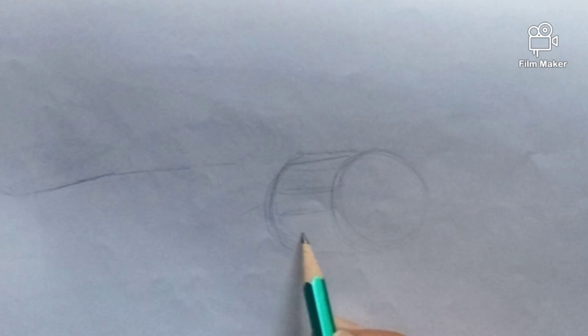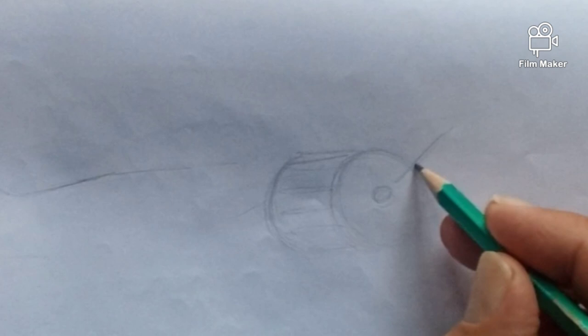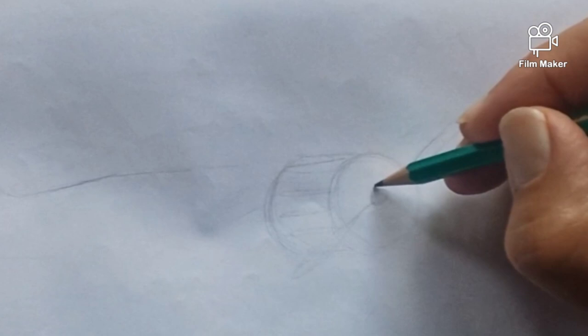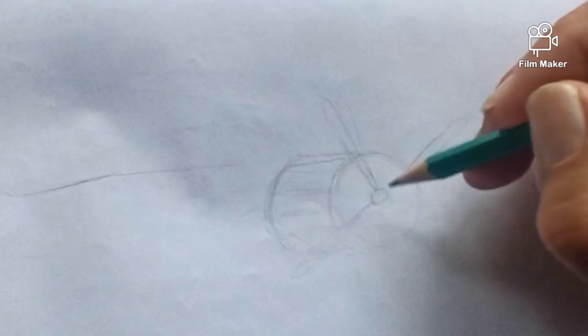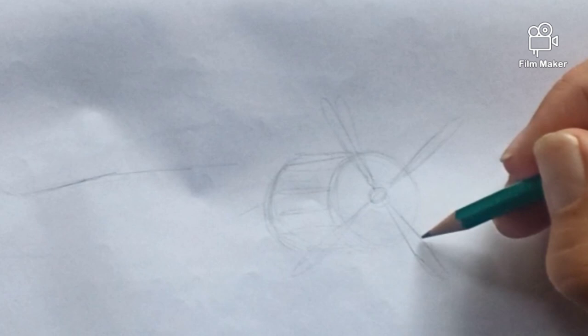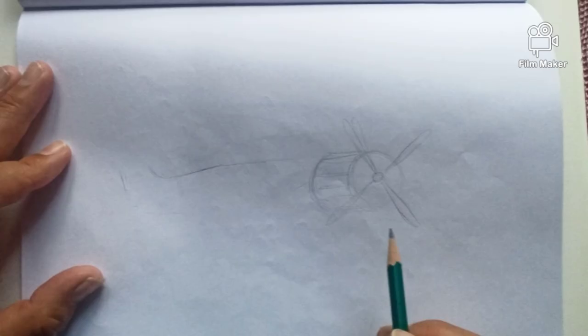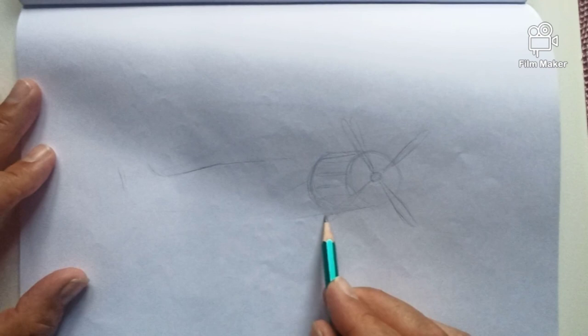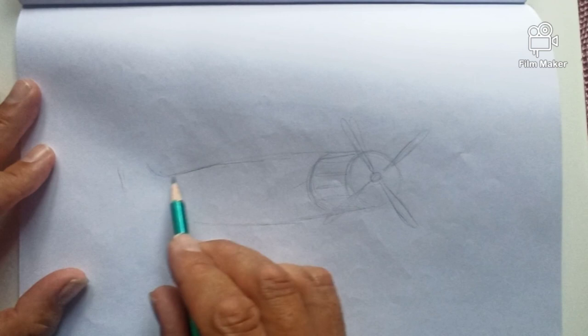And then we'll do the propeller. This is a basic sort of drawing. Now, some planes have two propellers. Some have four. This one has two. But I'm going to make it look like it's turning. And if we do the shape like that. And I'll do her in here, the pilot.